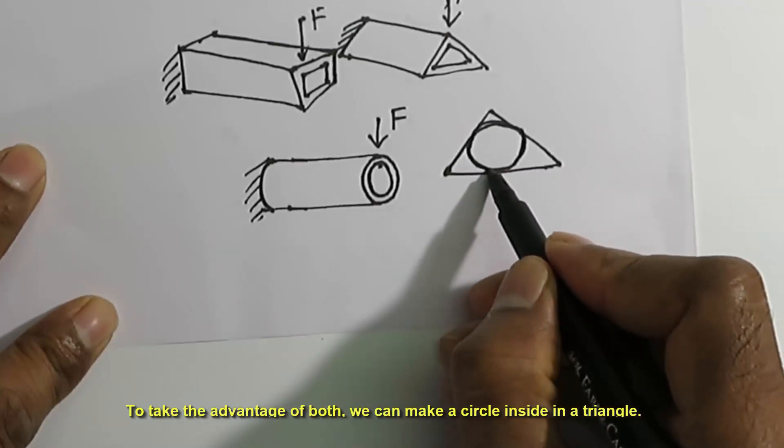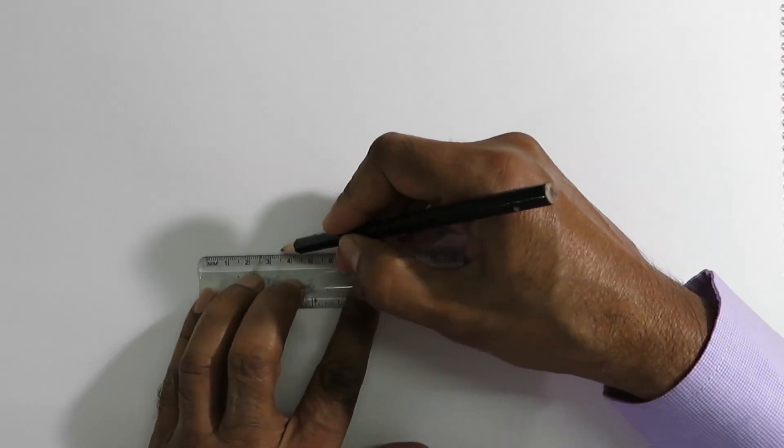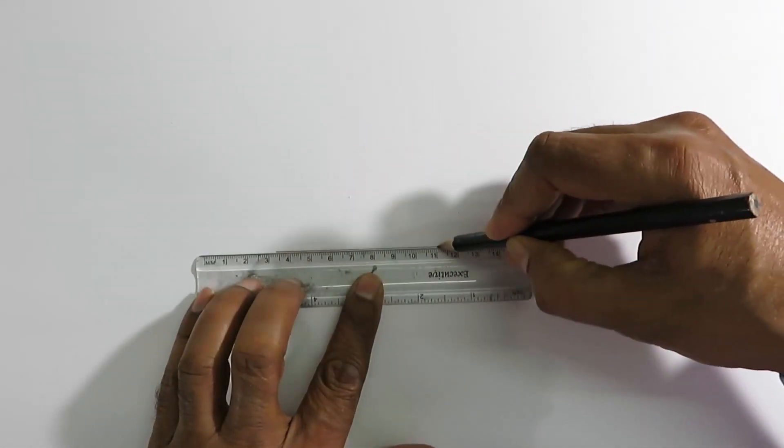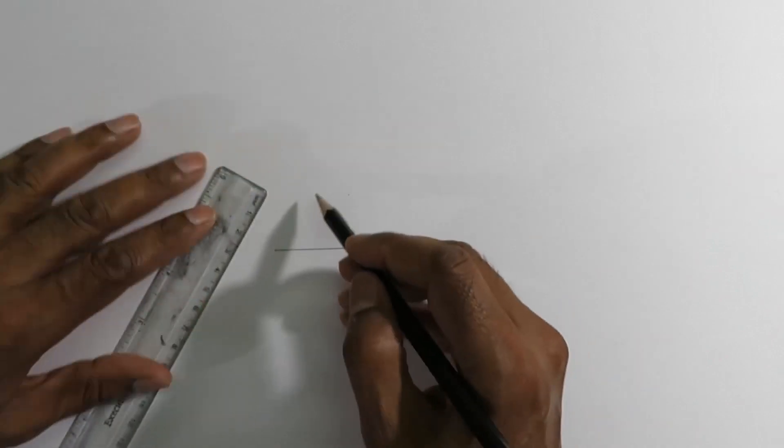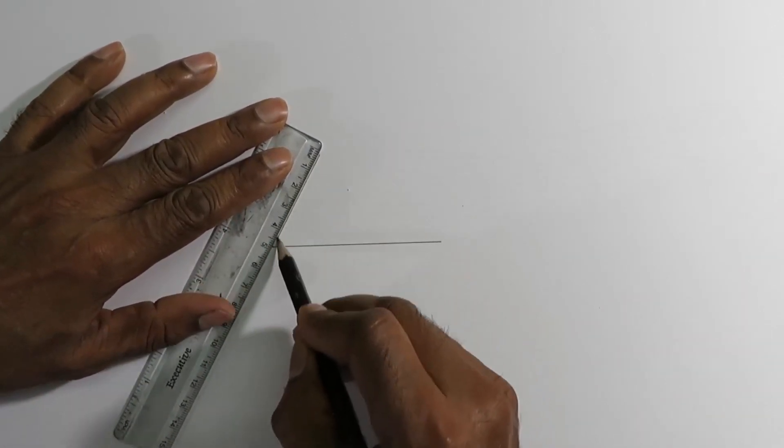To take the advantage of both, we can make a circle inside a triangle. So that was the background of the motivation for doing this exercise, which is to inscribe a circle inside a triangle.